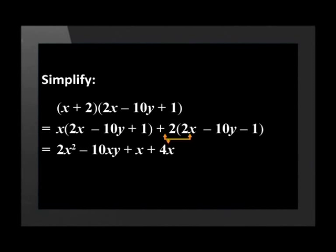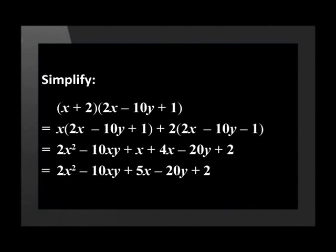2 times 2x is +4x. 2 times -10y is -20y. 2 times 1 is +2. Don't forget to look for like terms. Before we finish off, let's look at one more example that people often get wrong.